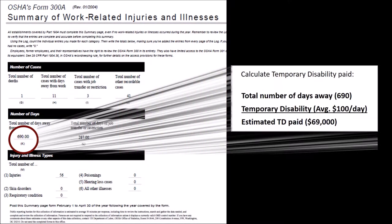Upon completing your OSHA 300 log, you will then tally the total number of days away from work and then complete your OSHA Form 300A. Using the total number of days away, you can estimate how much temporary disability was paid on your workers' compensation claims last year. Those temporary disability dollars go into impacting your experience modification rate, or XMOD, and ultimately your workers' compensation premiums. Remember, it's the dollars that have an impact on your XMOD, and when you have lost days, you are incurring temporary disability costs.